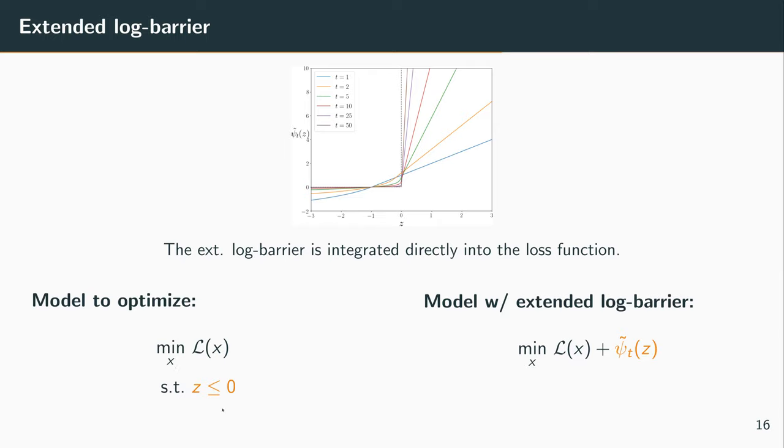To give an overview of what is the log barrier and how we actually use it, let's say we want to optimize this very simple setting where we want to minimize L of x with respect to x, with a constraint that z, which is a function of x, should be less than or equal to 0.